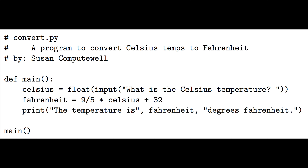So far, our Python code executes the exact same statements no matter what the user input is. The videos for this chapter demonstrate the if statement that allows you to write code that selects which statements are executed based on the values of expressions. We'll revisit one of the first programs we learned - the program to convert from Celsius to Fahrenheit - and modify it to print warnings if it's very hot or very cold.